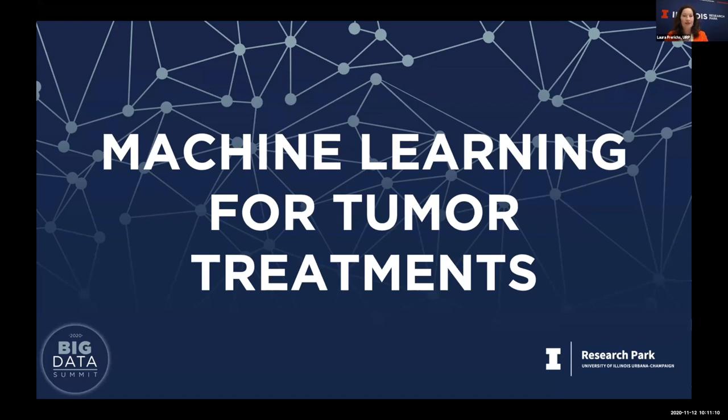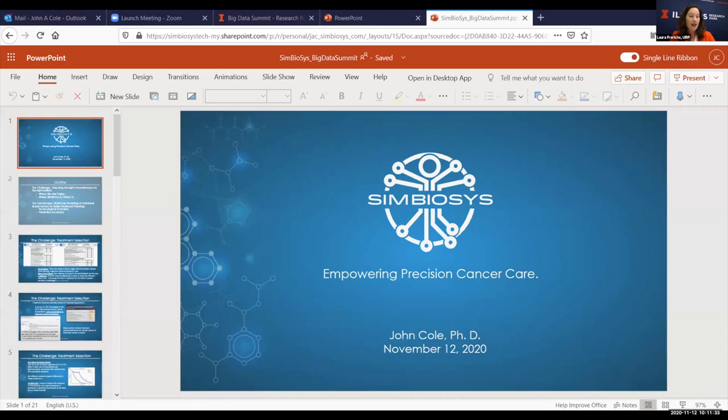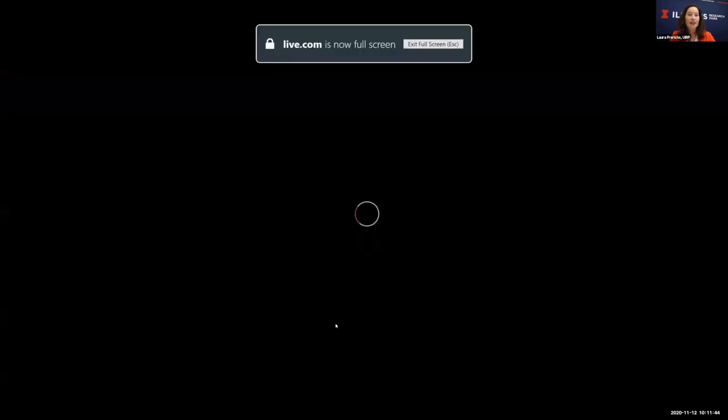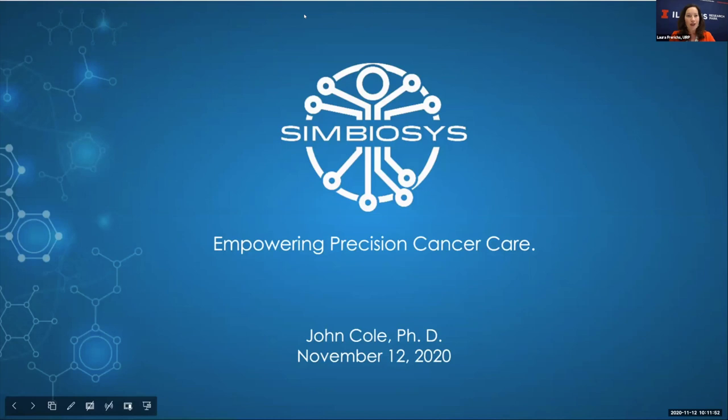Laura transitions from Yannick's talk to introduce John Cole, who received his PhD in biophysics from the University of Illinois. He met his co-founder Joe Peterson as graduate students and launched Symbiosis, located at Research Park's Enterprise Works Incubator. They use computational biology to help treat cancer with better targeted treatments based on individual genetics.